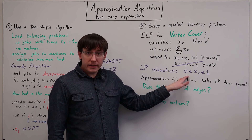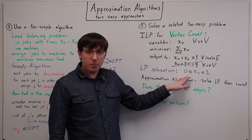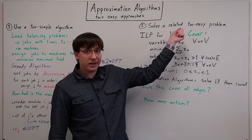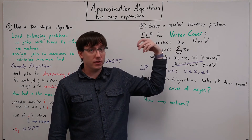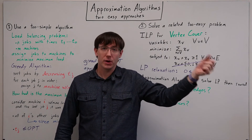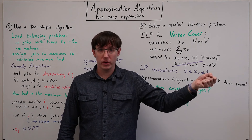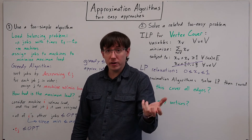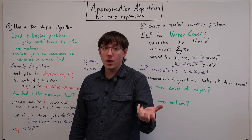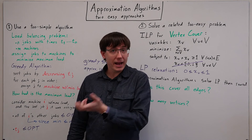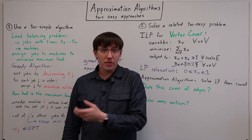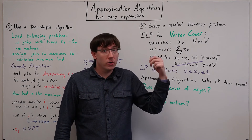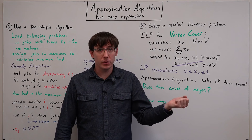Now we have a linear program, but that linear program no longer exactly describes the vertex cover problem that we started with. So if we solve this linear program, we might get an answer that has fractional values for some of the variables.